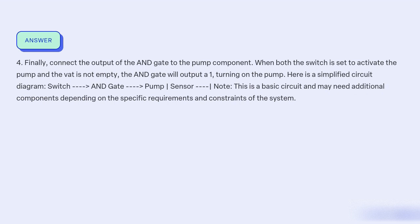When both the switch is set to activate the pump and the vat is not empty, the AND gate will output 1, turning on the pump. Here is the simplified circuit diagram: switch, AND gate, pump, sensor. Note: This is a basic circuit and may need additional components depending on the specific requirements and constraints of the system.